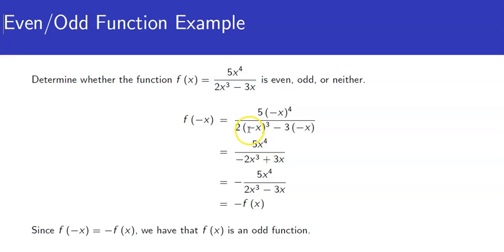On bottom, the negative of x quantity cubed is the same thing as negative x cubed. So we can pull the negative out in front and get negative 2x cubed. And then minus 3 times minus x gives us plus 3x.